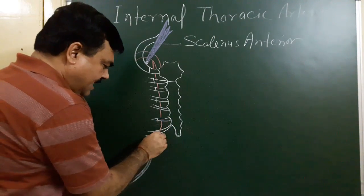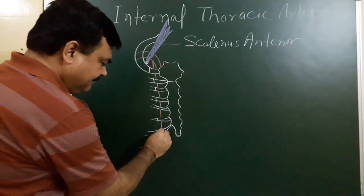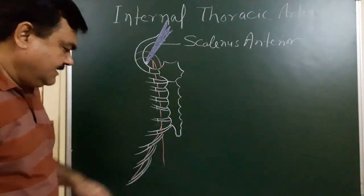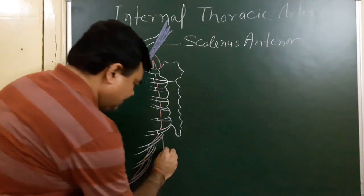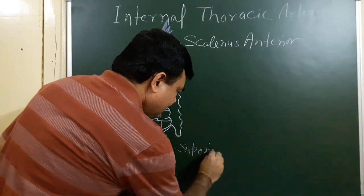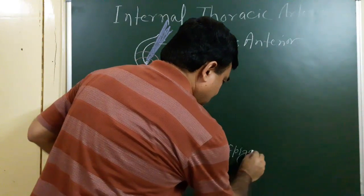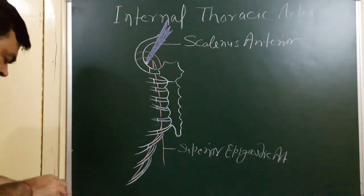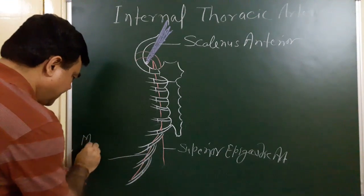In the sixth intercostal space, it divides into two branches. One is the costal branch and one is the vertical branch. There are two terminal branches: this branch is known as the superior epigastric artery, and this branch is known as the musculophrenic artery.